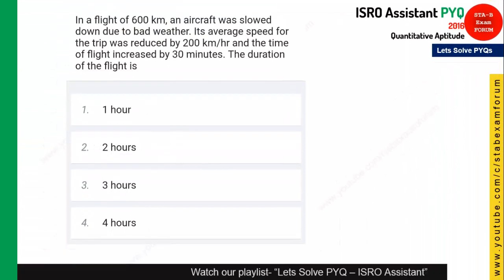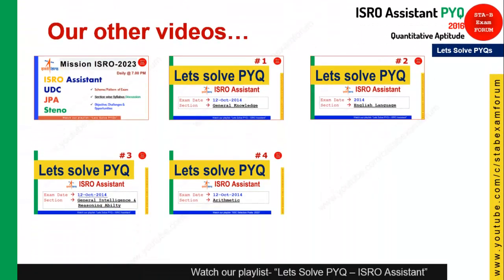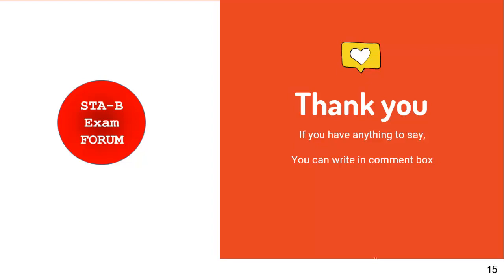We are having less time so the last question is given as homework — try to solve it and tell us the answer in the comment box. We have already finished previous year questions for 2012, 2014, and now we are going to complete 2016. We have done a lot for the ISRO Assistant exam. Please share with your friends. Thank you for watching and have a nice day.